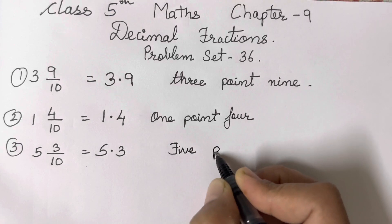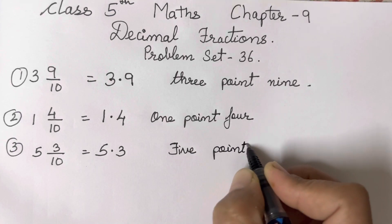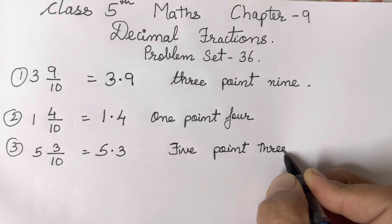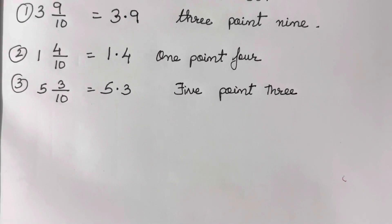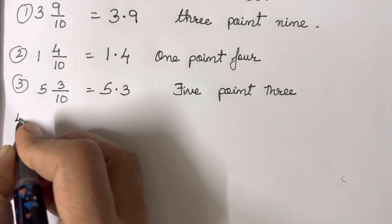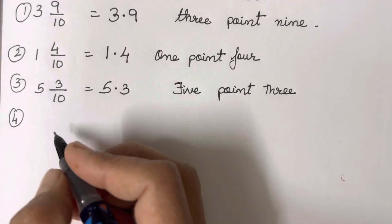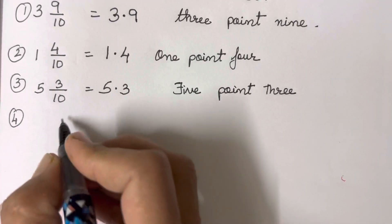So we will write it in words: five point three. Isn't it easy children? Remember, for hundreds also you have to solve in the same way. I will take an example at the last so that it will be clear.